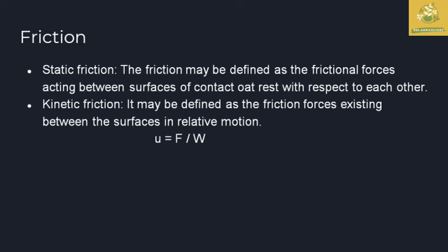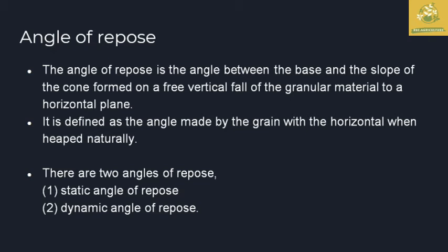There are two types of friction: static friction and kinetic friction. Static friction is the frictional force acting when there is contact between the rest surfaces of agricultural products with respect to each other. Kinetic friction is the friction at the surface of relative motion of the agricultural product once frictional force exists. Kinetic friction mu equals F-bar over W.